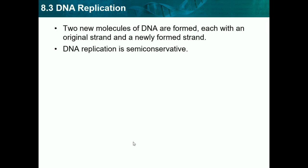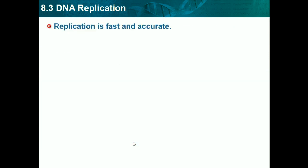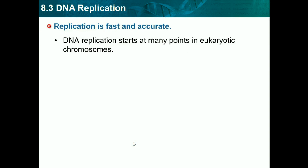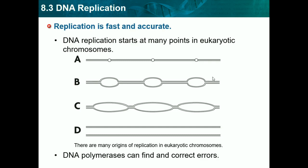DNA replication is semi-conservative, meaning the main idea is that there is an original and a new strand in each new DNA molecule, giving us two new molecules total. Replication is fast and accurate. It starts at many points in a eukaryotic chromosome — it's not just one big unzip, it happens in multiple areas. DNA polymerase can also find and correct errors that occur during replication.